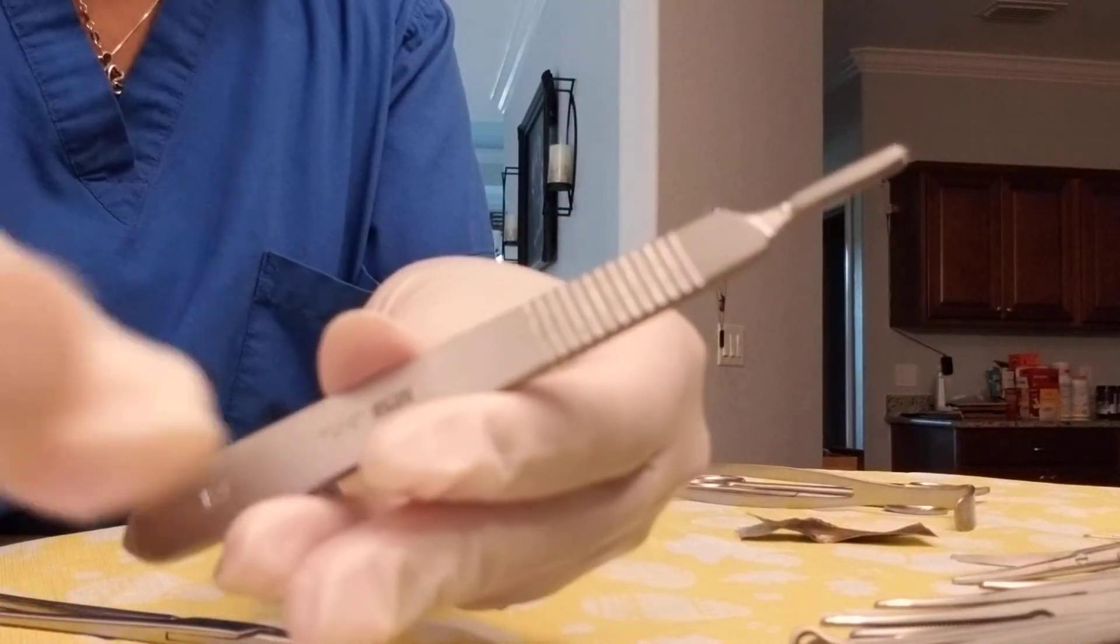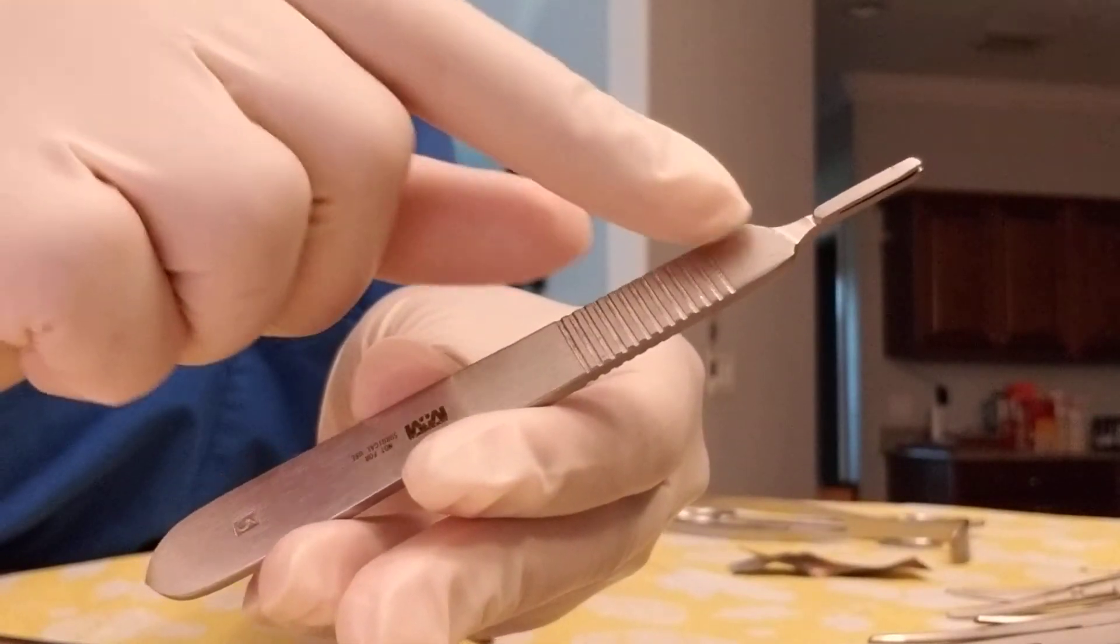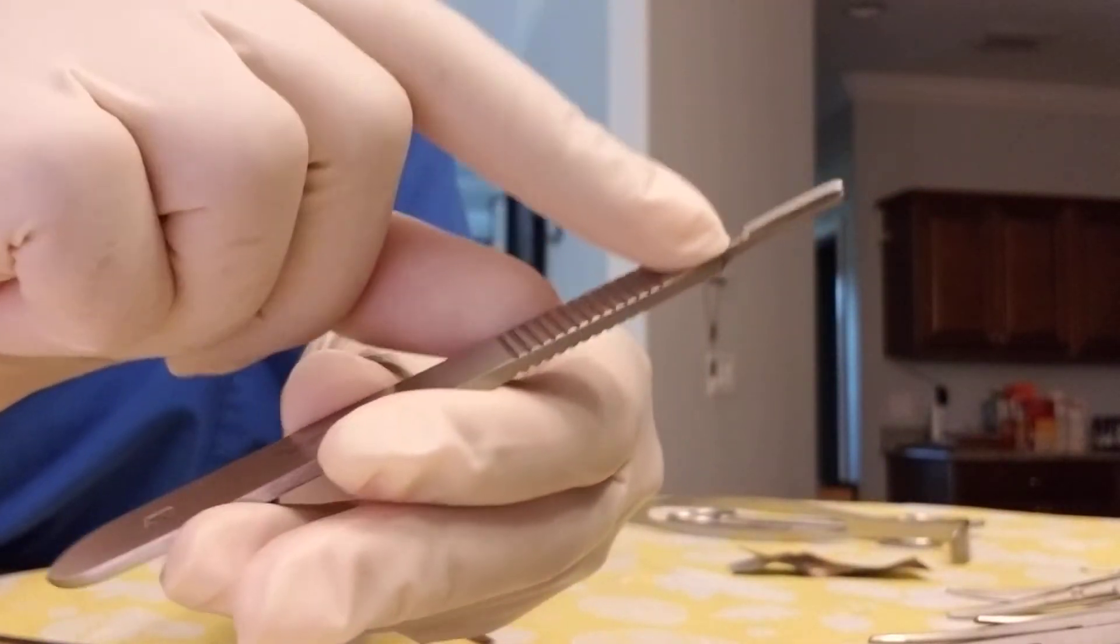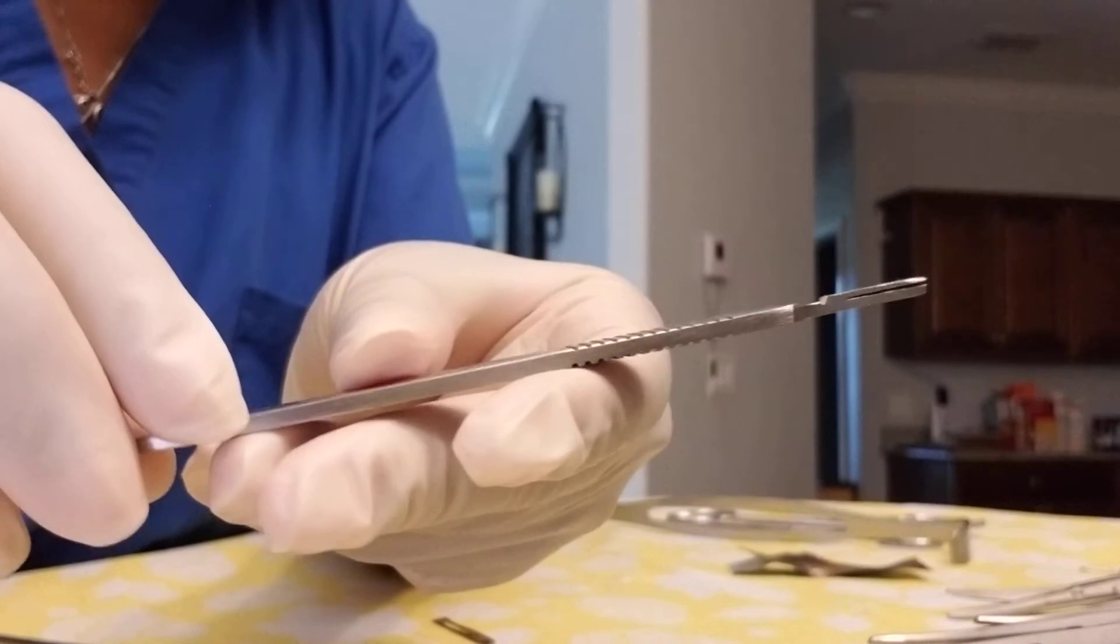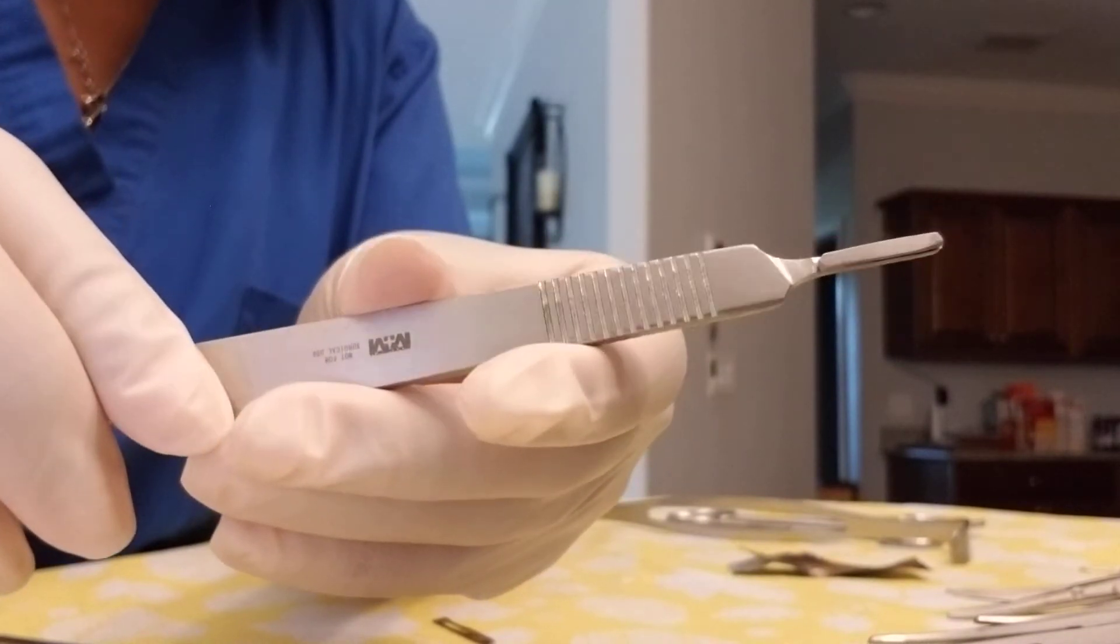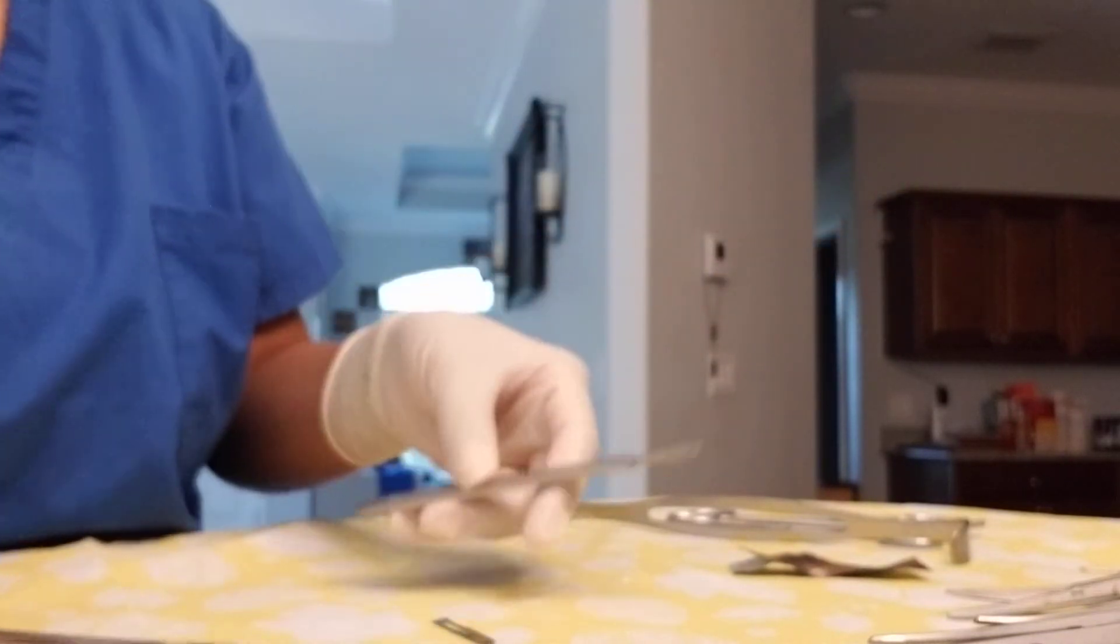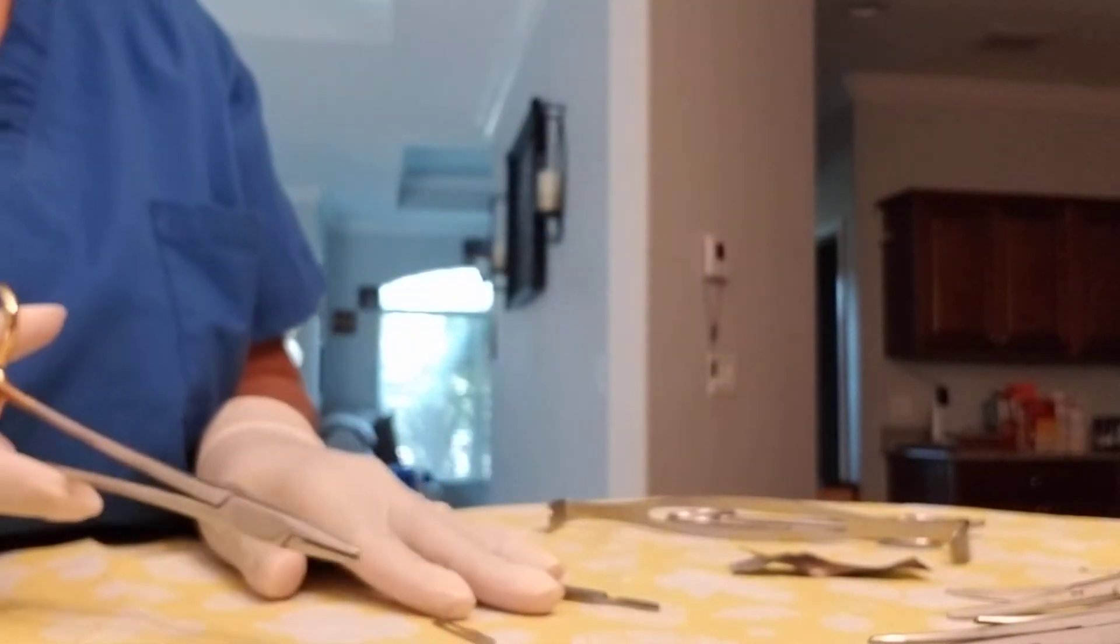I have it on the side—there we go—my ridges here and it's open at the top. The backside is smooth and flat. This is the side that I'm going to insert the blade on.